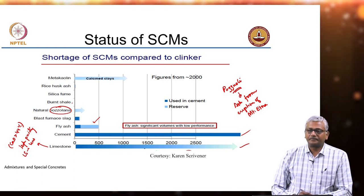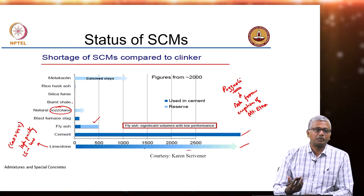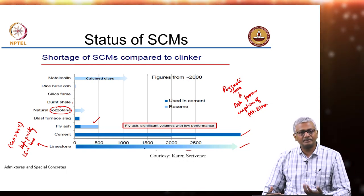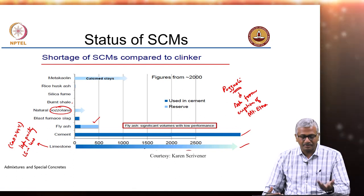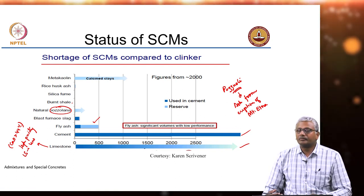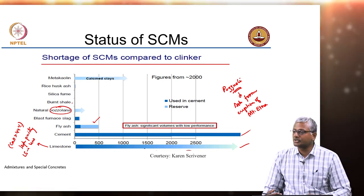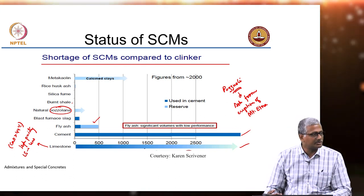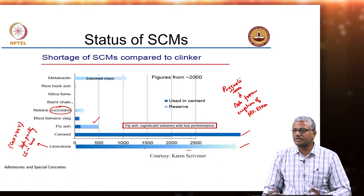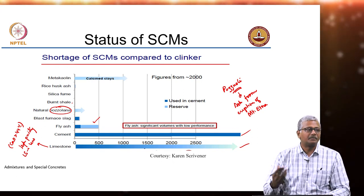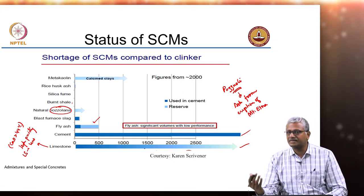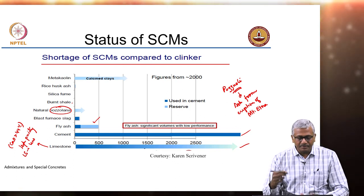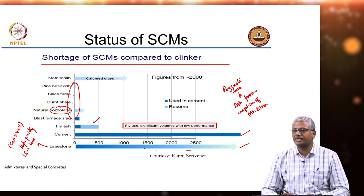Burnt shale is another option — when shale deposits are burned for power production, the burnt shale can be a good source of silica, but quantities are very small. Silica fume is obtained from the production of silicon metal or ferro-silicon alloys and is collected in quantities not large enough to make a major difference. Rice husk ash — from burning rice husk for energy — has interesting pozzolanic characteristics due to the silica present, and can be used as a cement replacement material, but all of these are present in extremely small quantities.